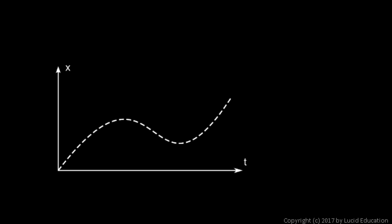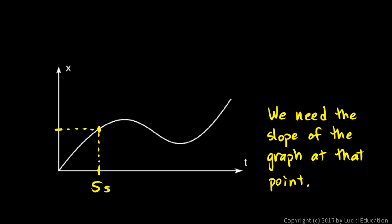We could imagine this graph being made up of a bunch of tiny straight line segments, and at a particular moment in time one of those segments would have a particular steepness. To be accurate we'd have to imagine an infinite number of infinitely small line segments. The slope of each one is the slope of the graph at that point, and that slope is what we call the derivative. The derivative essentially means the same thing as slope, and we recognize it can be different at every point on the graph. The derivative of position is the velocity.